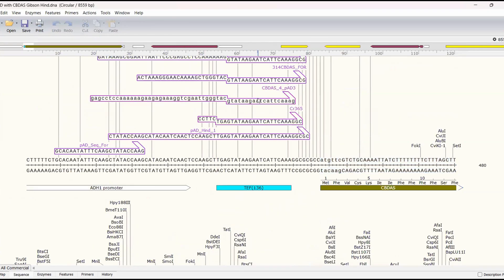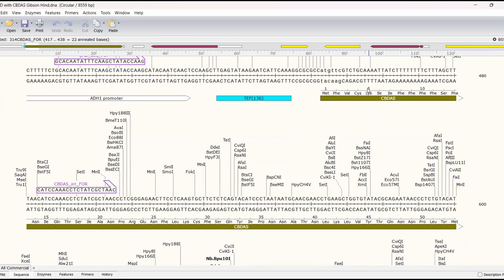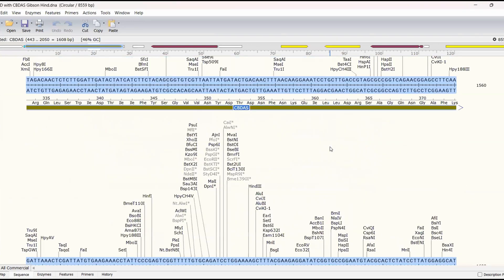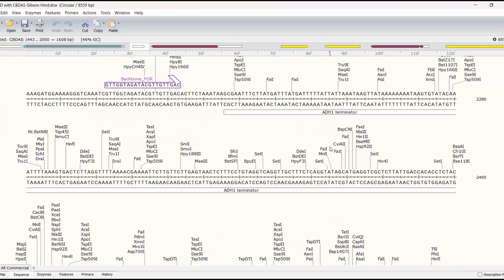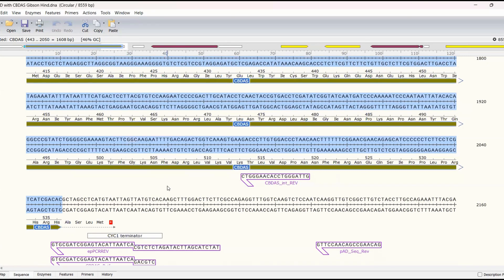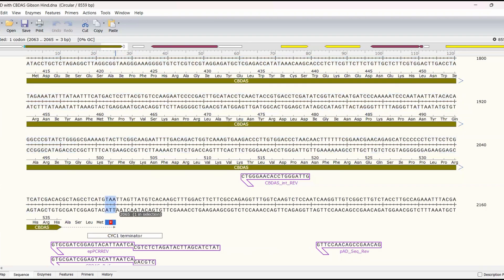And see there's already a bunch of primers designed here but here's the beginning of the CBDAS gene and down here is the end of the CBDAS gene. So let's say for example that we want to amplify this gene. First of all I'm going to turn off the restriction site so it doesn't look so messy but let's say we want to amplify this gene that actually ends here with this stop codon.